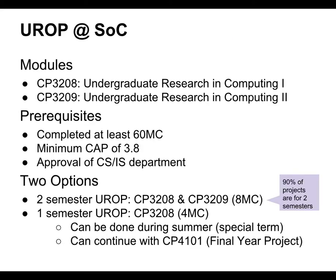UROP in the School of Computing consists of two modules, both worth four MCs each, done in series. You take CP3208 in the first semester and CP3209 in the second semester. There are some prerequisites for your safety, because we find some students even in year one are very interested in doing research right away, which is usually not a good idea.